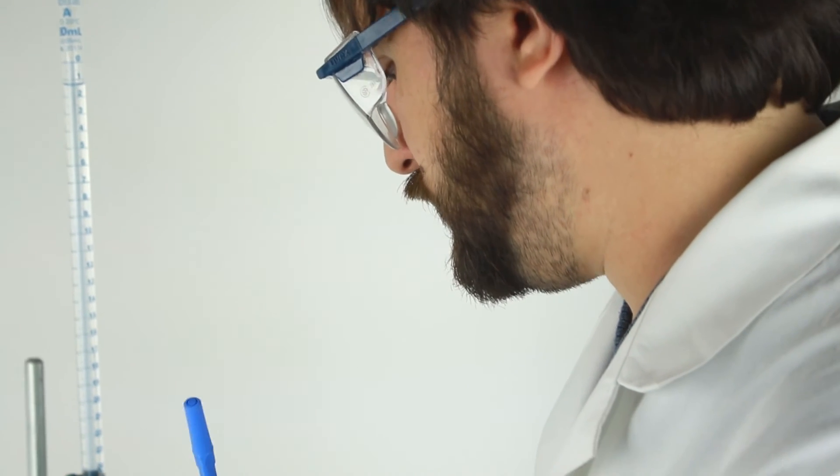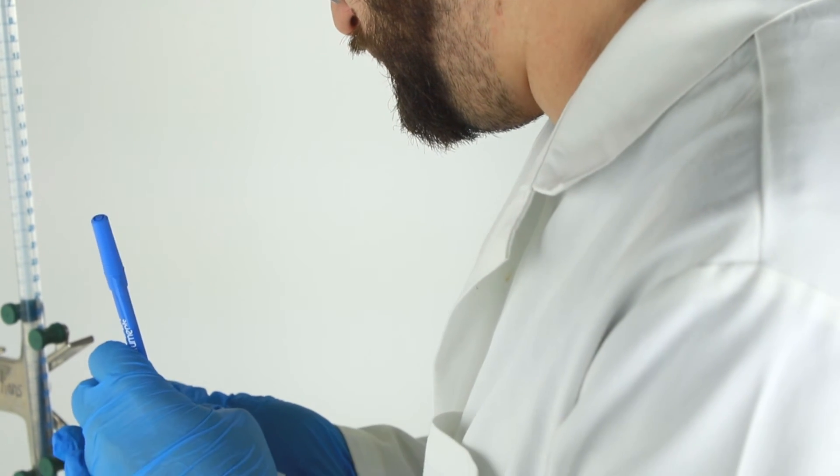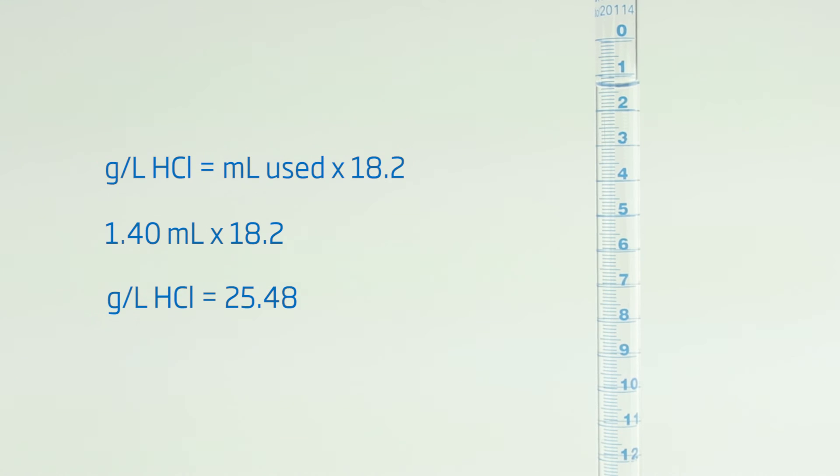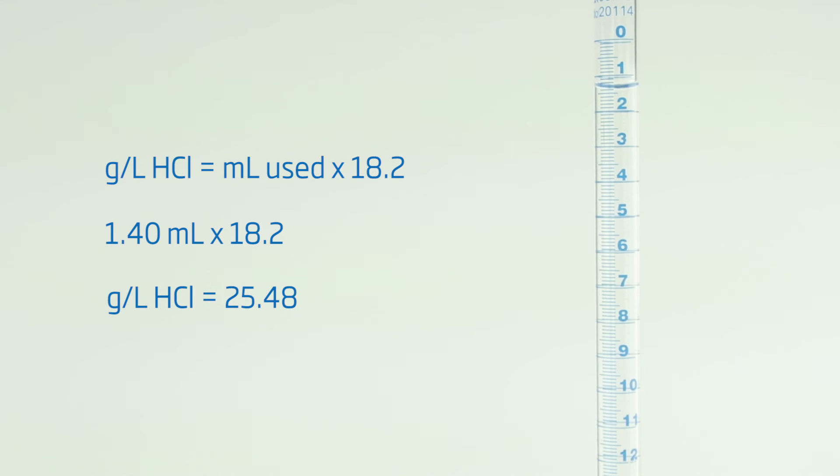Now, we'll determine how much titrant we used and perform the calculation. Reading the meniscus, we can determine exactly how much titrant we used by comparing the amount of titrant in the burette before and after titration. We used 1.4 milliliters of titrant. To calculate acidity as grams per liter of hydrochloric acid, multiply the milliliters used by 18.2.